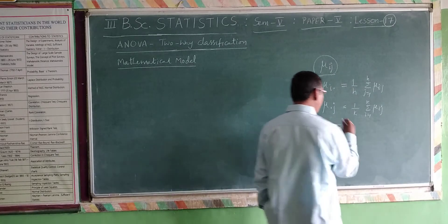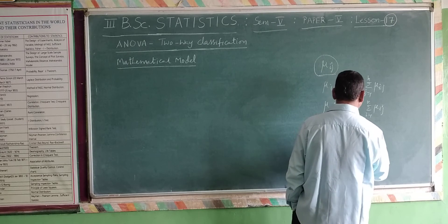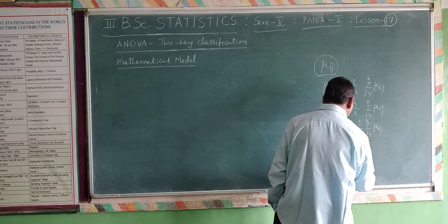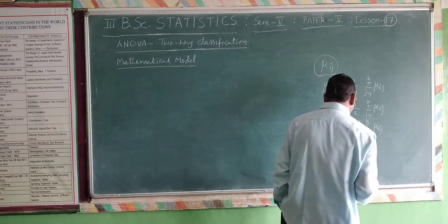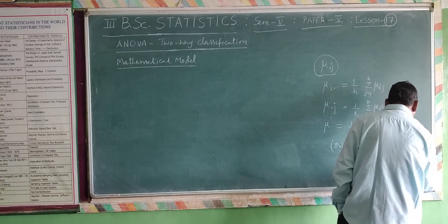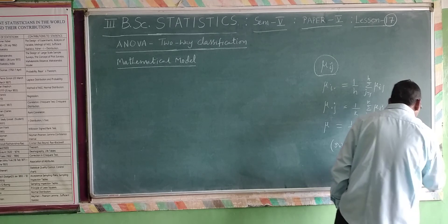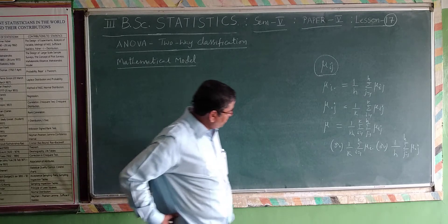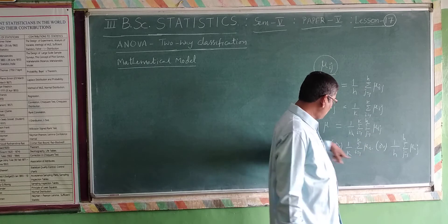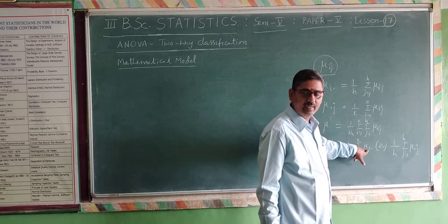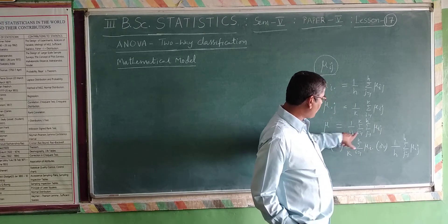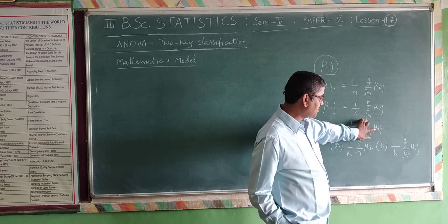And mu is equal to 1 over n, where n equals k times h, times the summation i equals 1 to k, j equals 1 to h of mu ij. This can also be written as 1 over k, summation i equals 1 to k of mui dot, or equivalently as 1 over h, summation j equals 1 to h of mu dot j. Here capital M is k times h, so these three formulas for mu, mui dot, and mu dot j are established.